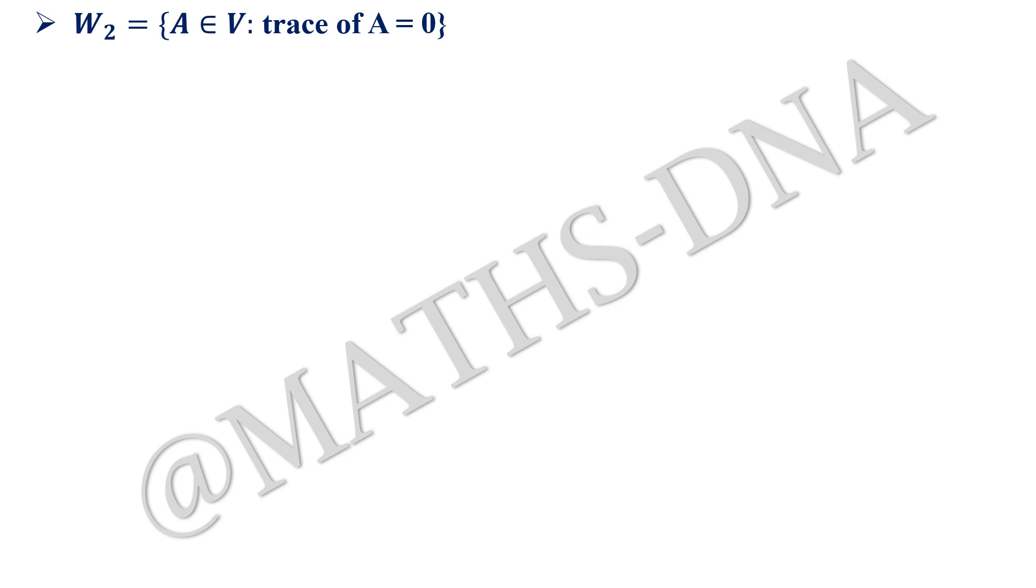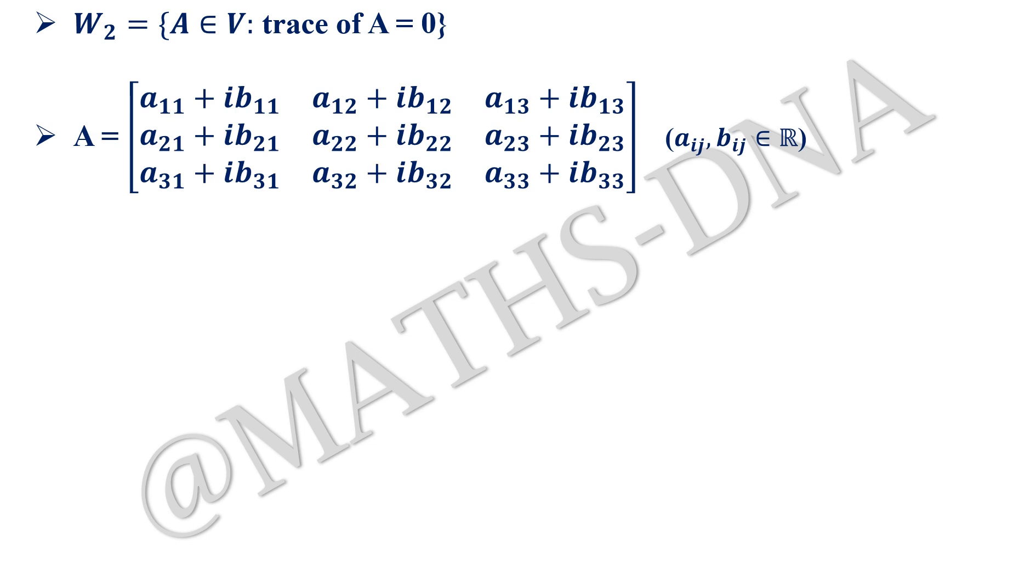Now coming to W₂, W₂ = {A ∈ V : trace of A = 0}. Just one simple condition: trace of A should be equals to 0. Take the matrix A and as trace of A equals to 0, so a₁₁ + ib₁₁ + a₂₂ + ib₂₂ + a₃₃ + ib₃₃, the sum of these elements should be equals to 0. So the real part independently has to be 0 and the complex part independently has to be 0. So from